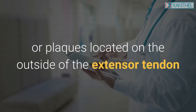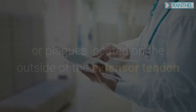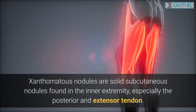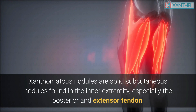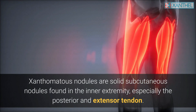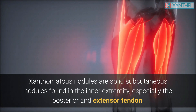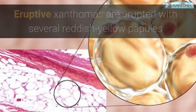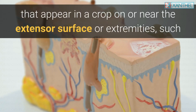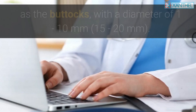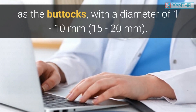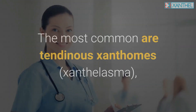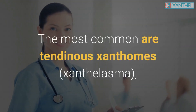Flat xanthomas are broad, yellowish macules or plaques located on the outside of the extensor tendon and upper extremities such as the buttocks and thighs. Xanthomatous nodules are solid subcutaneous nodules found in the inner extremity, especially the posterior and extensor tendon. Eruptive xanthomas appear as several reddish-yellow papules erupting in crops on or near the extensor surface or extremities such as the buttocks, with a diameter of 1 to 10 millimeters.